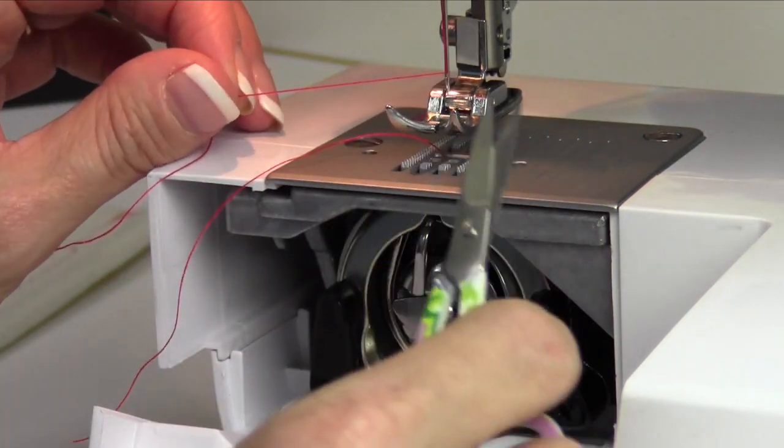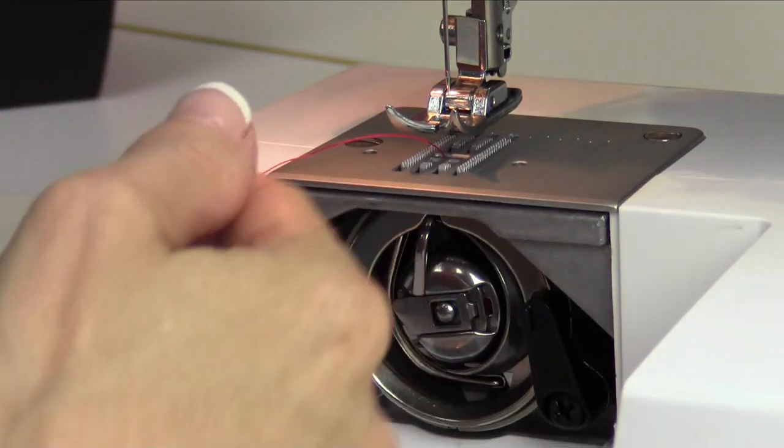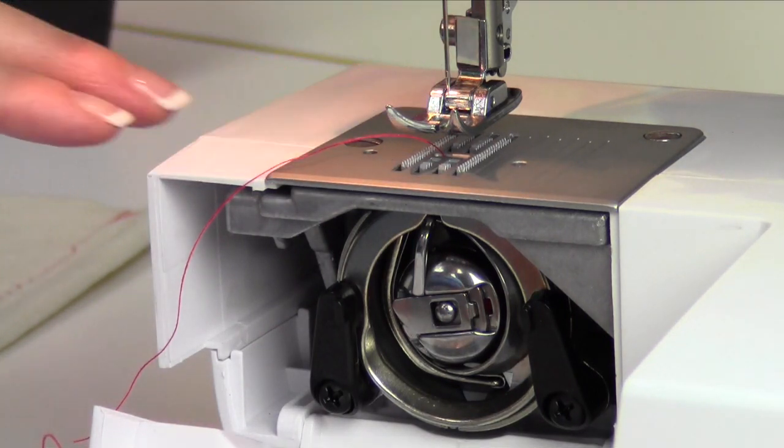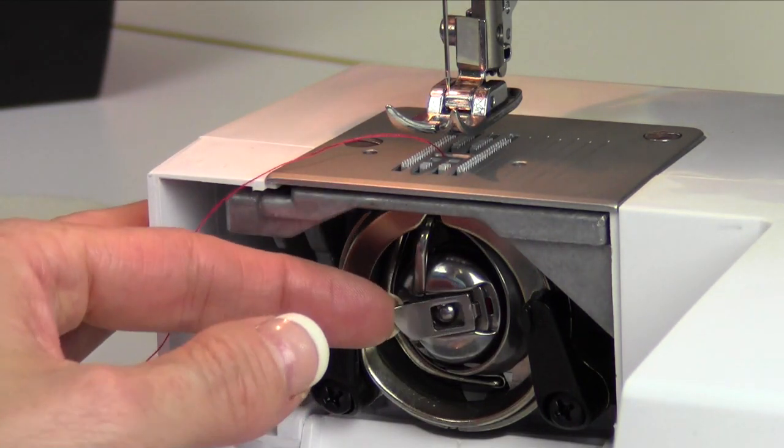What I want you to do is take a pair of scissors, reach up to the spool, clip it at the spool, and then pull that thread, the remaining thread, out the needle. Everything comes down and out and not backwards up into your machine.